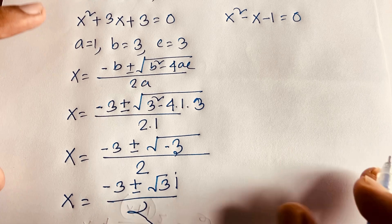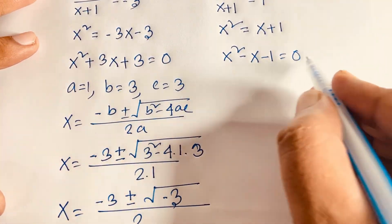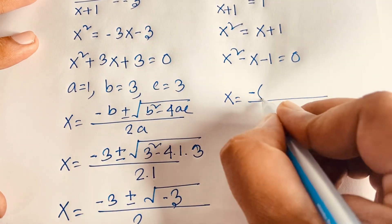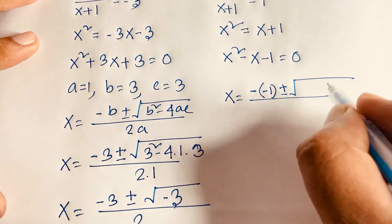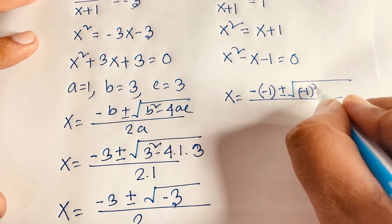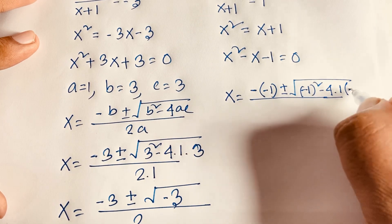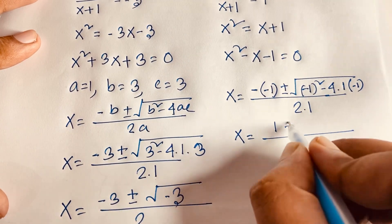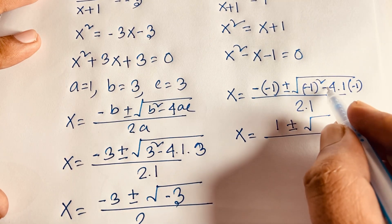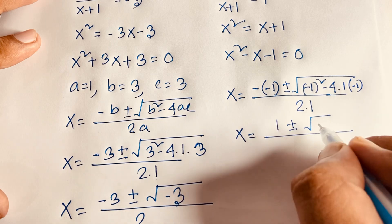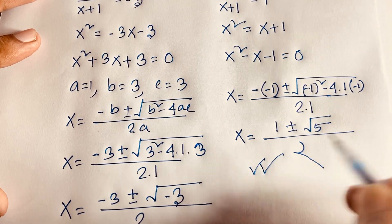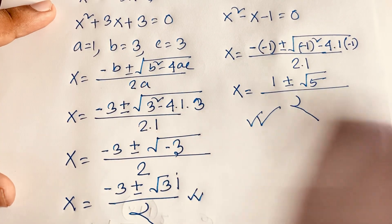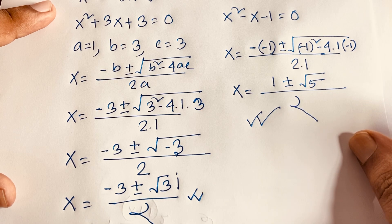For Case 2: x squared minus x minus 1 = 0, with a=1, b=-1, c=-1. Applying the quadratic formula: x = (1 ± √(1 + 4)) / 2 = (1 ± √5) / 2. So we have four answers in total for this Canadian Math Olympiad equation. Thank you all — if you enjoyed this video, please subscribe for more interesting videos. Goodbye, take care.